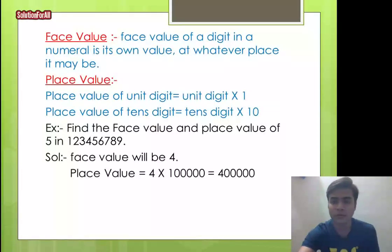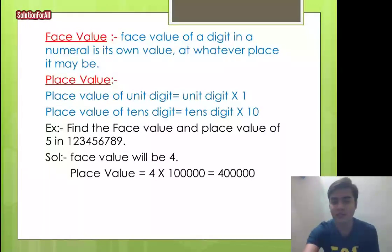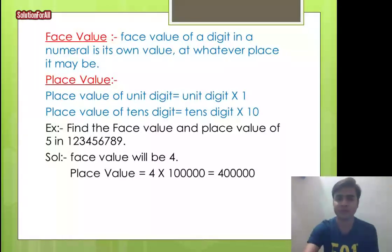To find place value: multiply the unit digit by 1, the tens digit by 10, and so on. For example, to find the face value and place value of 5 in 123456789: the face value is simply 5, and the place value is 5 × 10⁴.